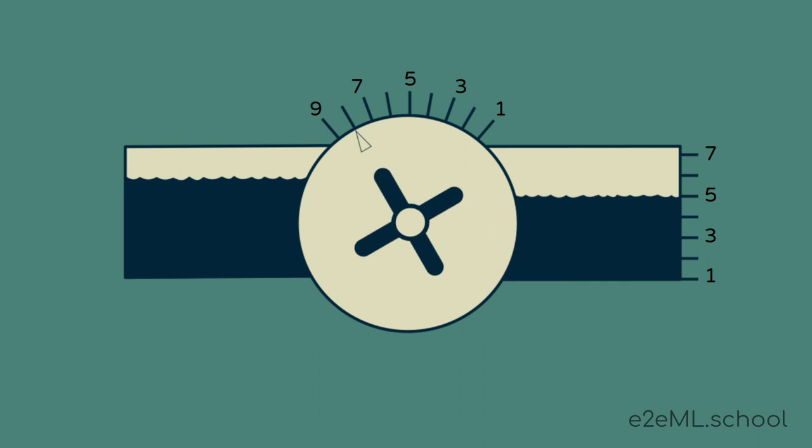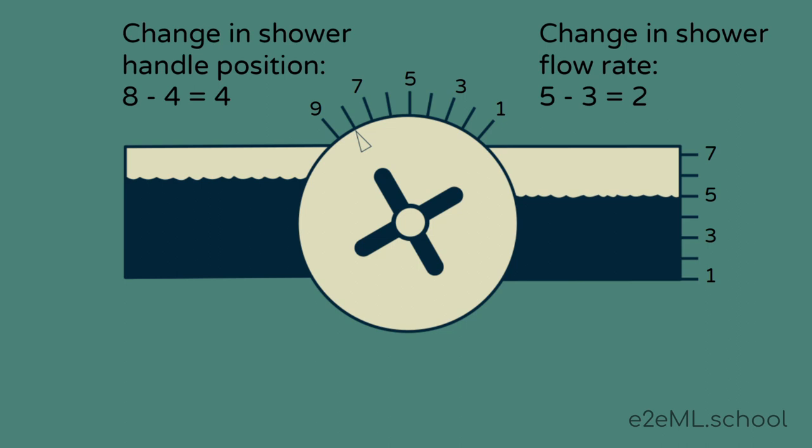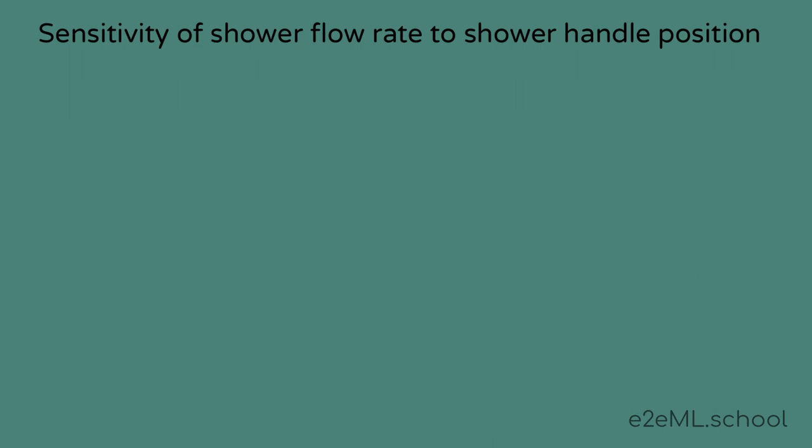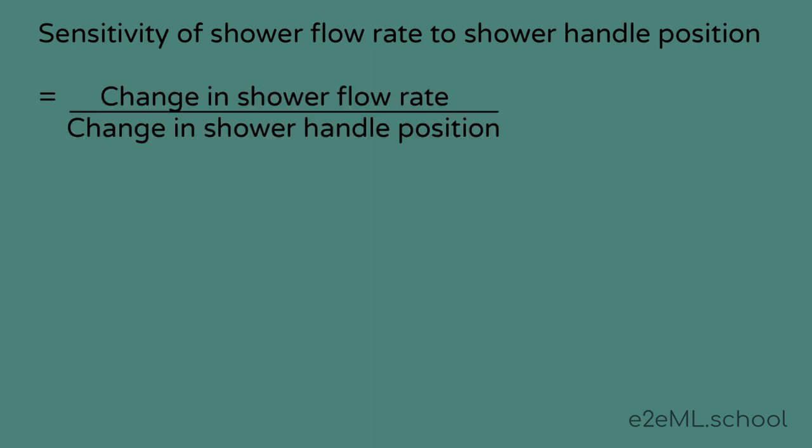By dividing the change in shower flow rate by the change in the handle setting, we can find the sensitivity of the shower flow rate to handle setting. In this case, it's 5 minus 3 divided by 8 minus 4 or 2 divided by 4 or 1 half. Sensitivity is a way of quantifying how much the shower flow rate will change if we adjust the shower handle up by one position. For each unit increase in shower handle position, we can expect the flow rate to increase by a half unit. This terminology quickly becomes awkward, but luckily math helps us out here. Sensitivity is a change in one thing per a one unit change in another thing. Change in shower flow rate per one unit change in shower handle position, for instance.